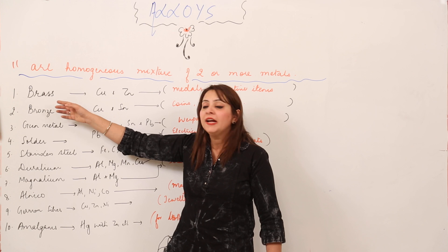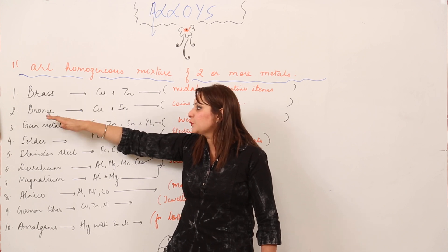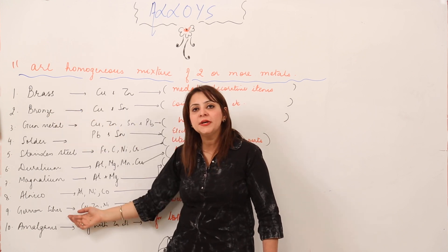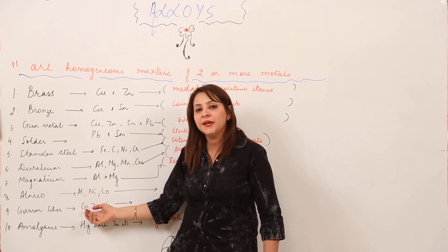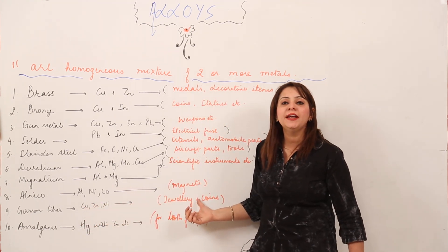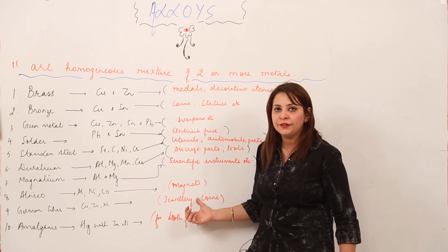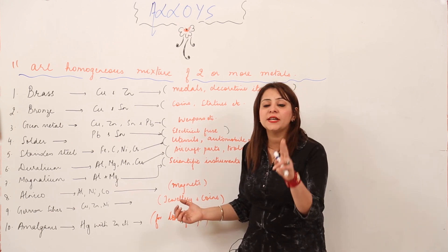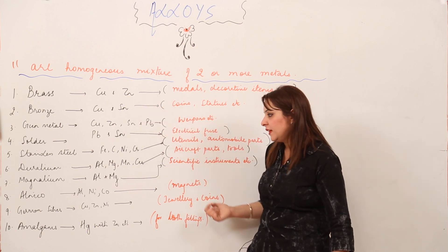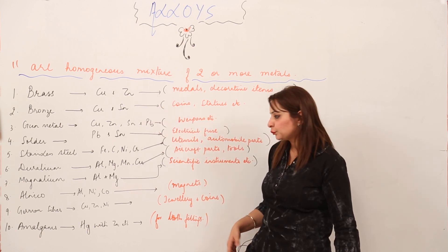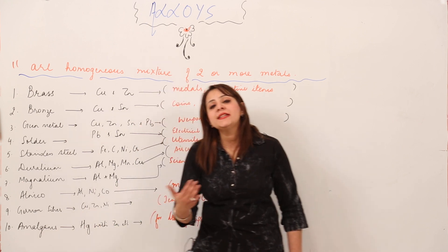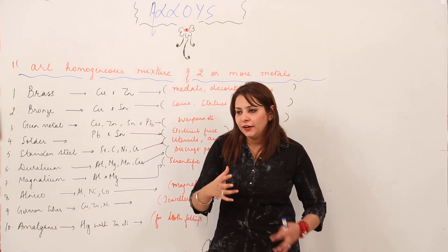German silver is made up of copper, zinc, and nickel. It is the fourth alloy of copper, alongside brass, bronze, and gun metal. In German silver, copper is mixed with zinc and nickel. It is used in making coins and jewelry. So two copper alloys are used in making coins: bronze and German silver.